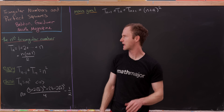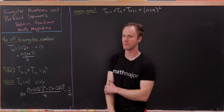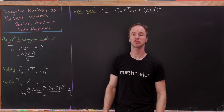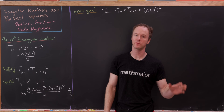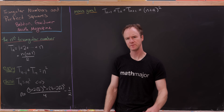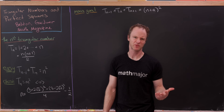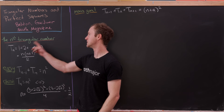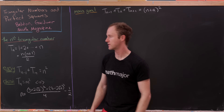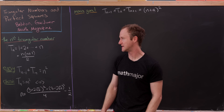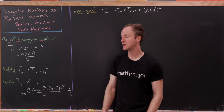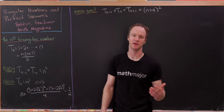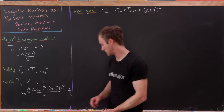Today we're going to look at an interesting result that I found in the math magazine, and it has to do with triangular numbers and square numbers. But let's recall what a triangular number is first. The nth triangular number, which we'll denote by t sub n, is simply the sum 1 plus 2 plus 3 all the way up to n.